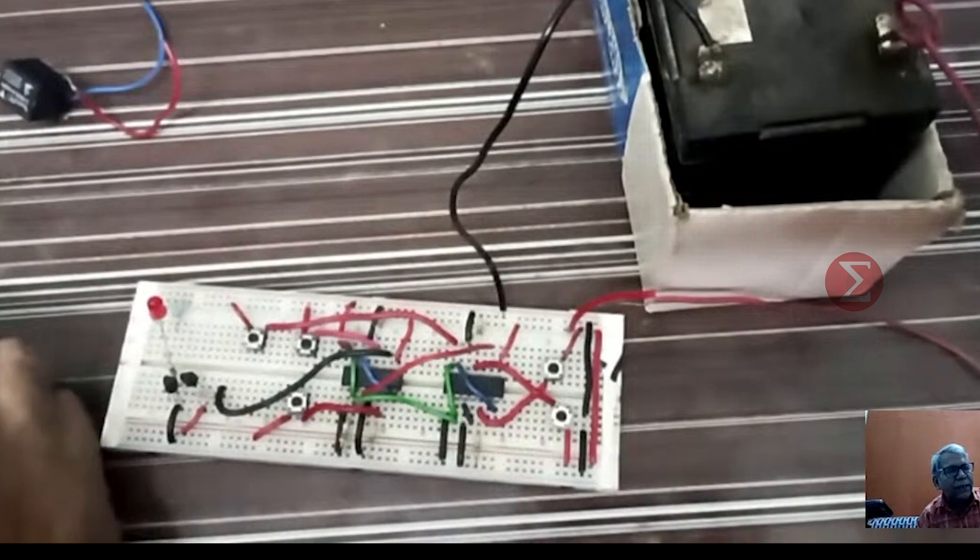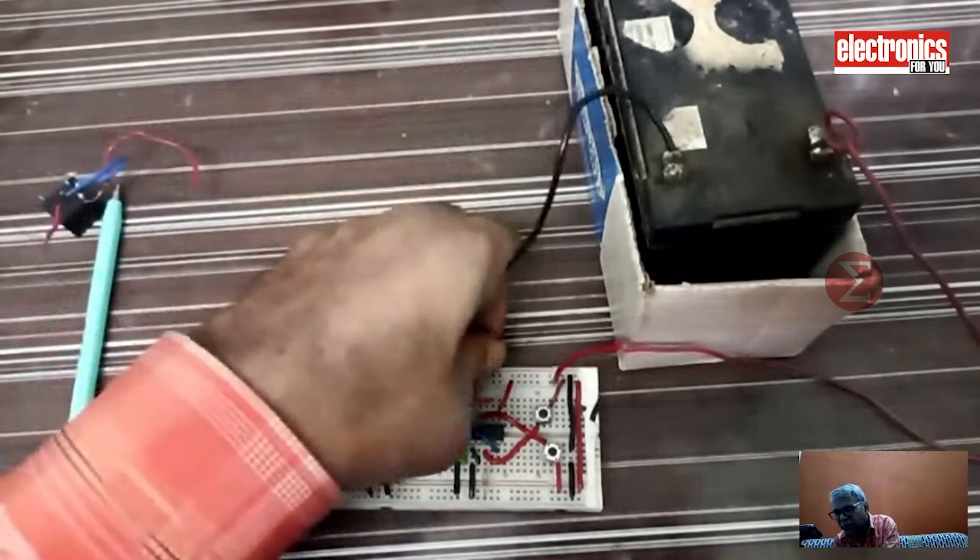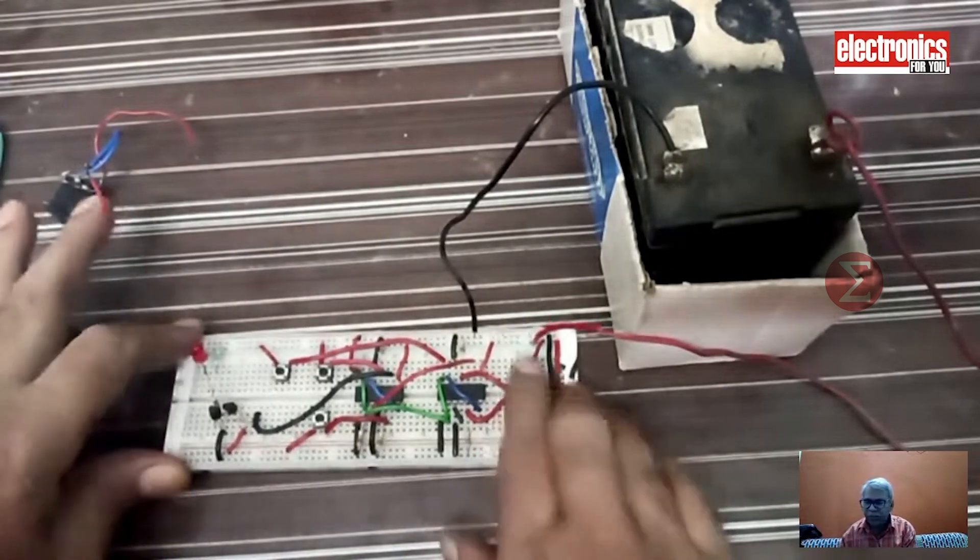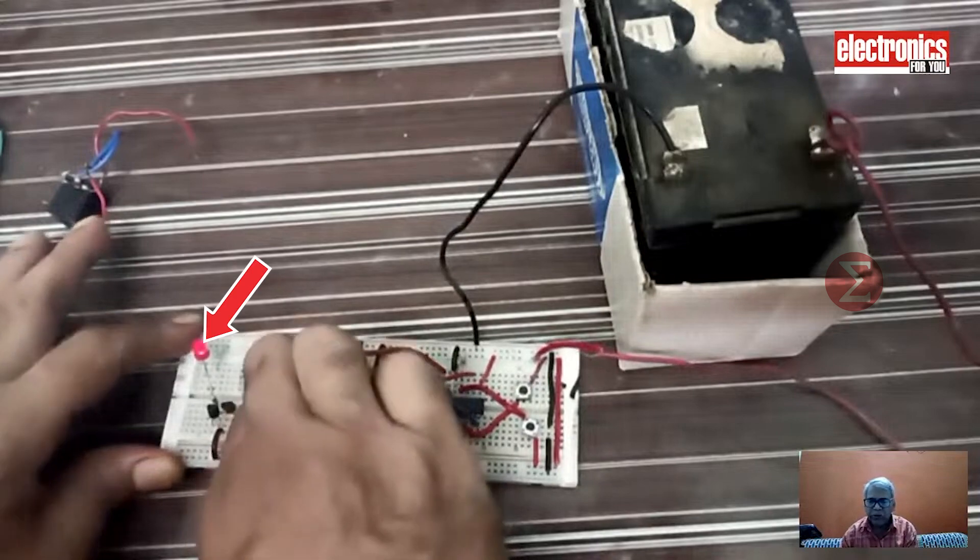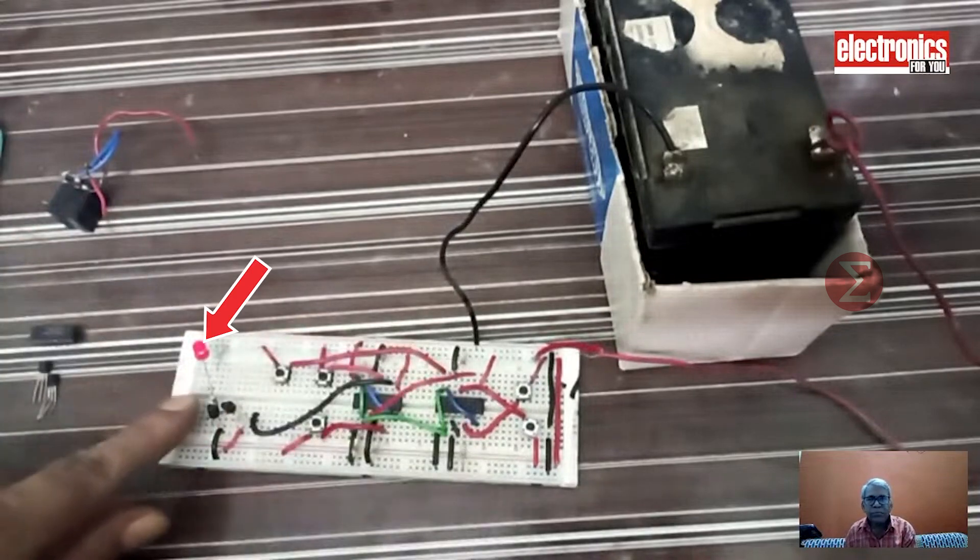Let us see the demonstration now. First connect the power supply to the circuit. I have pressed the 8 switch and then 2nd switch, then 6th switch and lastly 5th switch. This LED is on to represent that the gate is open now.